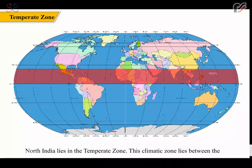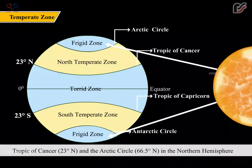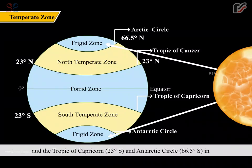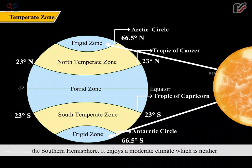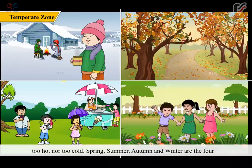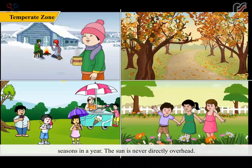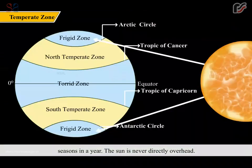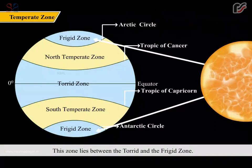The temperate zone lies between the Tropic of Cancer (23 degrees north) and the Arctic Circle (66.5 degrees north) in the northern hemisphere, and between the Tropic of Capricorn (23 degrees south) and the Antarctic Circle (66.5 degrees south) in the southern hemisphere. It enjoys a moderate climate which is neither too hot nor too cold. Spring, summer, autumn and winter are the four seasons in a year. The sun is never directly overhead. This zone lies between the torrid and the frigid zone.